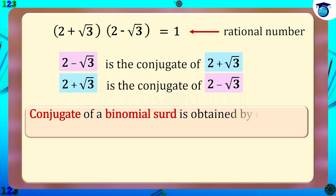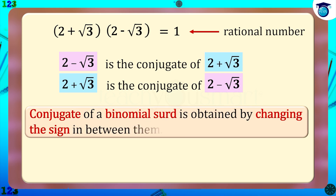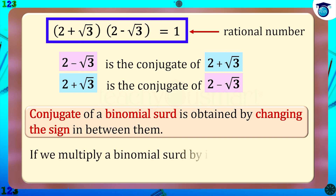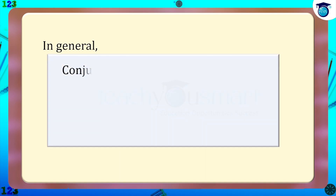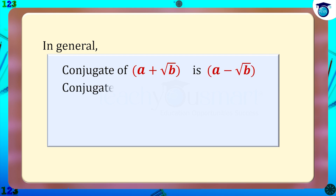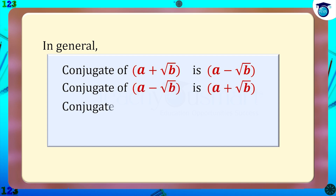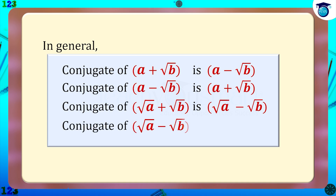The conjugate of a binomial surd is obtained by changing the sign between the two terms. If we multiply a binomial surd by its conjugate, the product is a rational number. In general: the conjugate of (a + √b) is (a − √b); the conjugate of (a − √b) is (a + √b); the conjugate of (√a + √b) is (√a − √b); and the conjugate of (√a − √b) is (√a + √b).